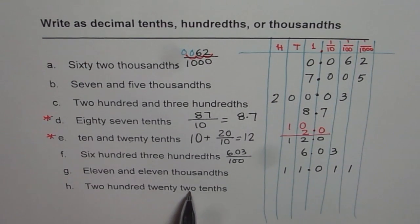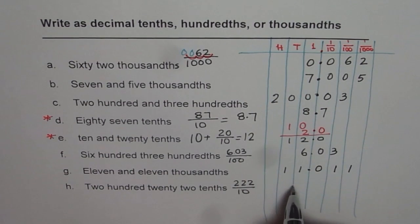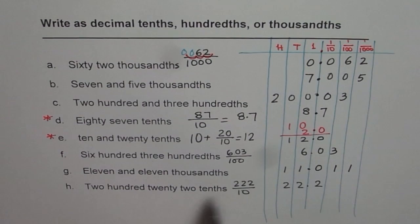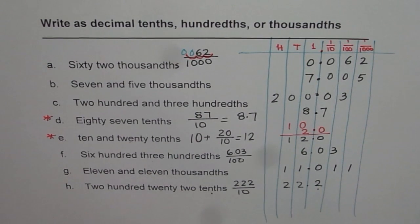Two hundred twenty-two tenths, that is two hundred twenty-two divided by ten. So it is twenty-two point two. It makes sense. Two hundred twenty-two should end at tenths place. That is the tenths place. So it is twenty-two point two.